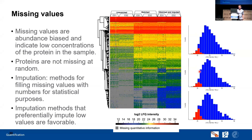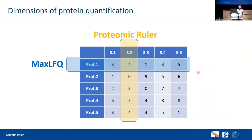To summarize: we started with our protein-by-sample matrix and I discussed relative quantification with MaxLFQ. There is also absolute quantification via the Proteomic Ruler tool available in Perseus, but I won't discuss that today. Thank you for your attention.